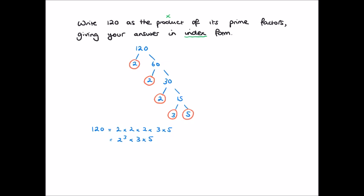120, as the product of its prime factors, is 2 cubed times 3 times 5. So now that we have the basic concept, let's look at a few examples.